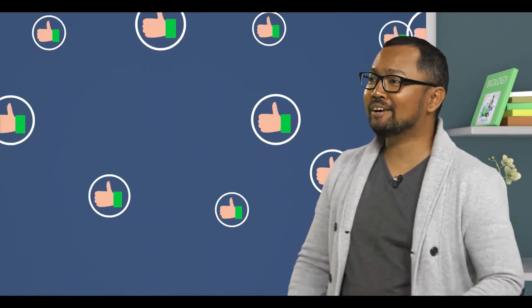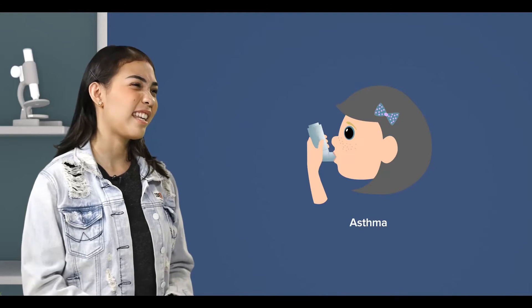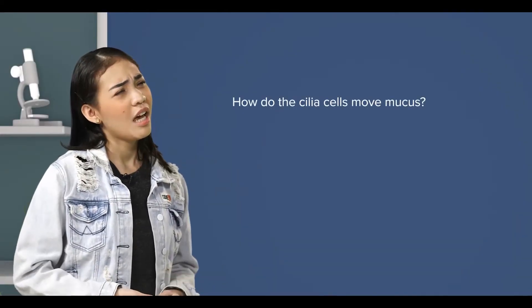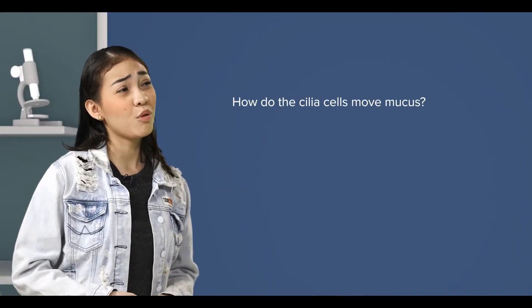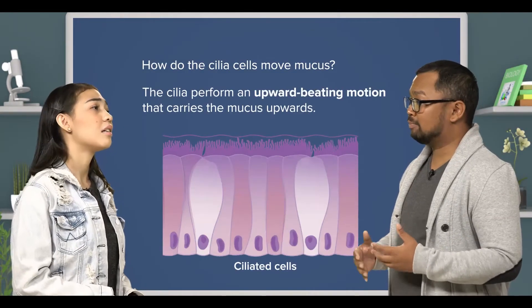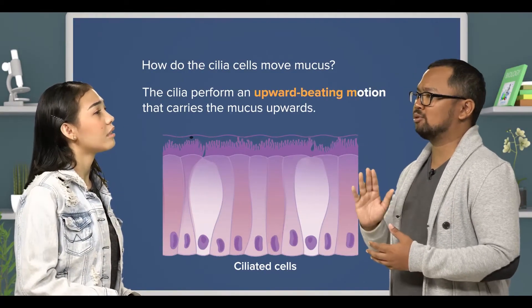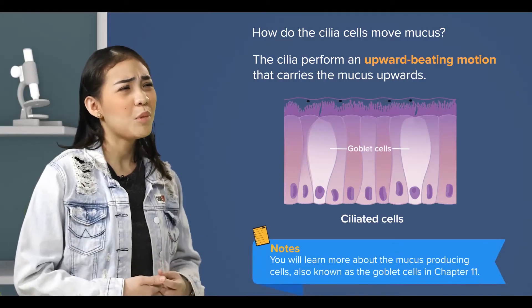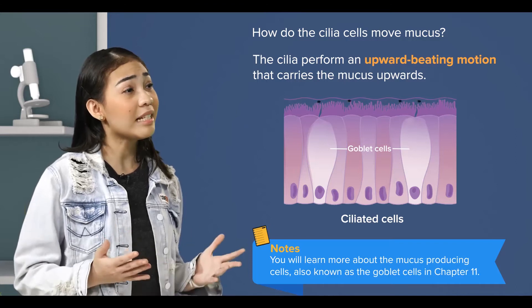They are also found in the bronchi of our lungs. Well done. How did you know that? I had asthma as a kid, and I remember the doctors talking about it. I'm wondering, how do the cilia cells move mucus? Well, the cilia perform an upward beating motion that carries the mucus upwards. I'm assuming that the mucus is made and released by cells near the ciliated cells?